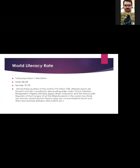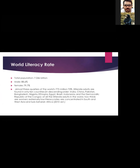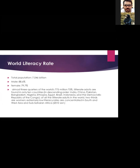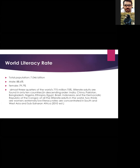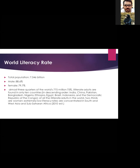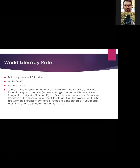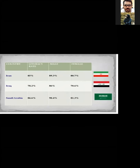World literacy rate: total population 7.0446 billion; male literacy 88.6%, female literacy 79.7%. Almost three-quarters of the world's 775 million illiterate adults are found in only 10 countries: India, China, Pakistan, Bangladesh, Nigeria, Ethiopia, Egypt, Brazil, Indonesia, and the Democratic Republic of the Congo. Of all illiterate adults in the world, two-thirds are women. Extremely low literacy rates are concentrated in South and West Asia and Sub-Saharan Africa.